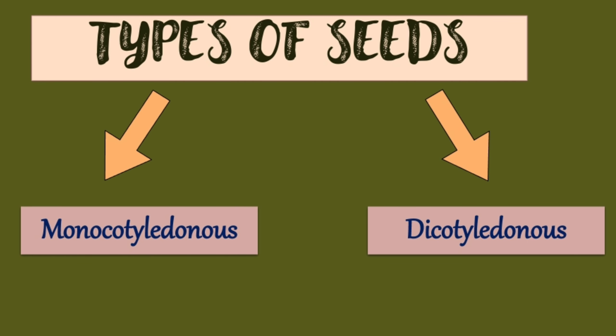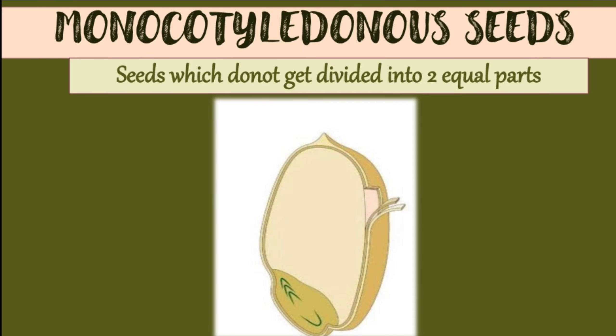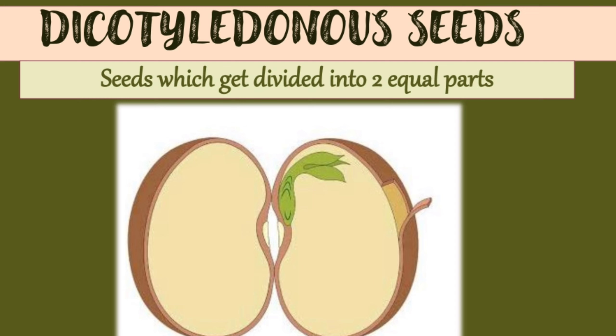There are two types of seeds: monocotyledonous and dicotyledonous. Monocotyledonous seeds do not get divided into two equal parts. Seeds which get divided into two equal parts, as you can see in the picture, are called dicotyledonous seeds.